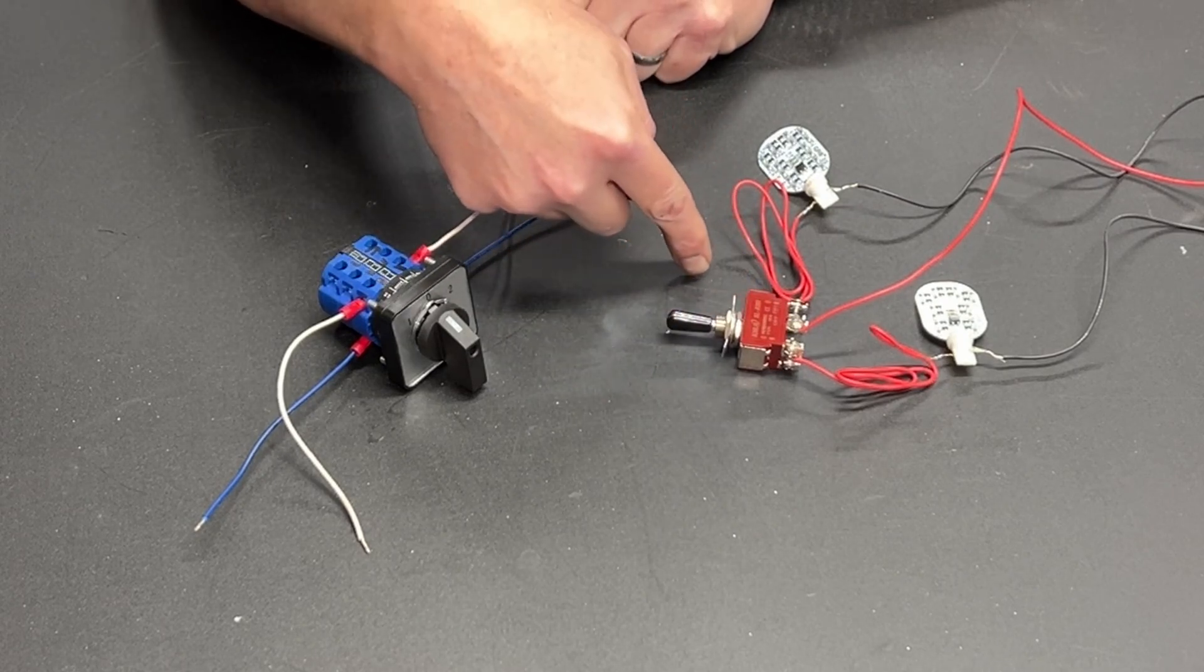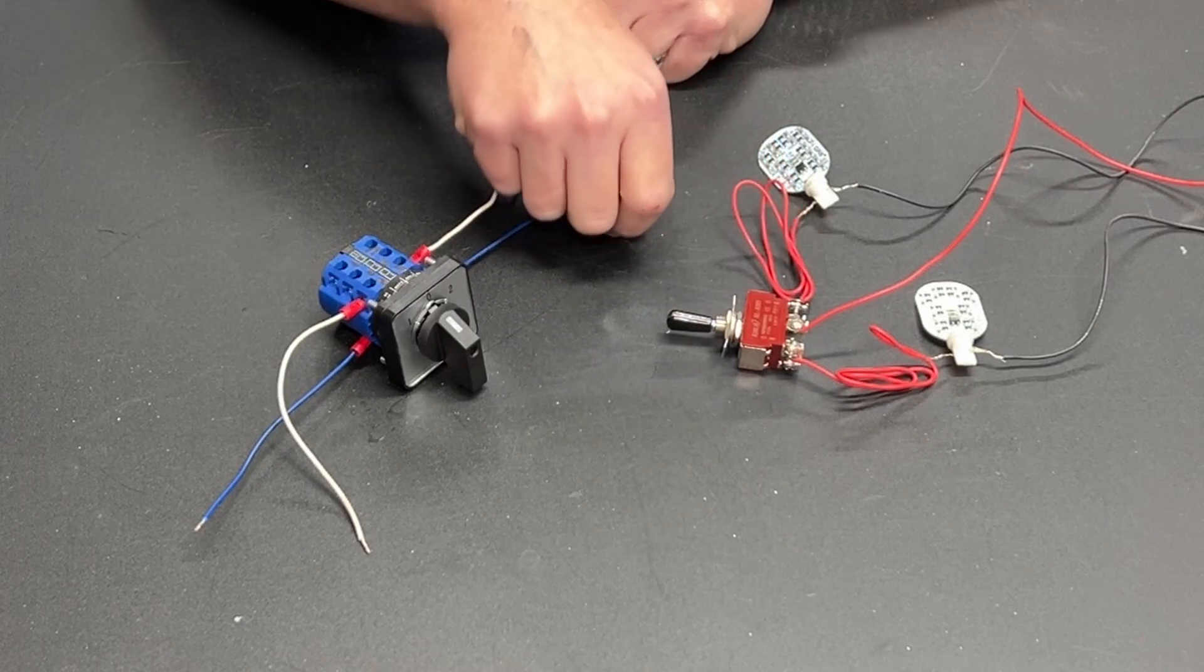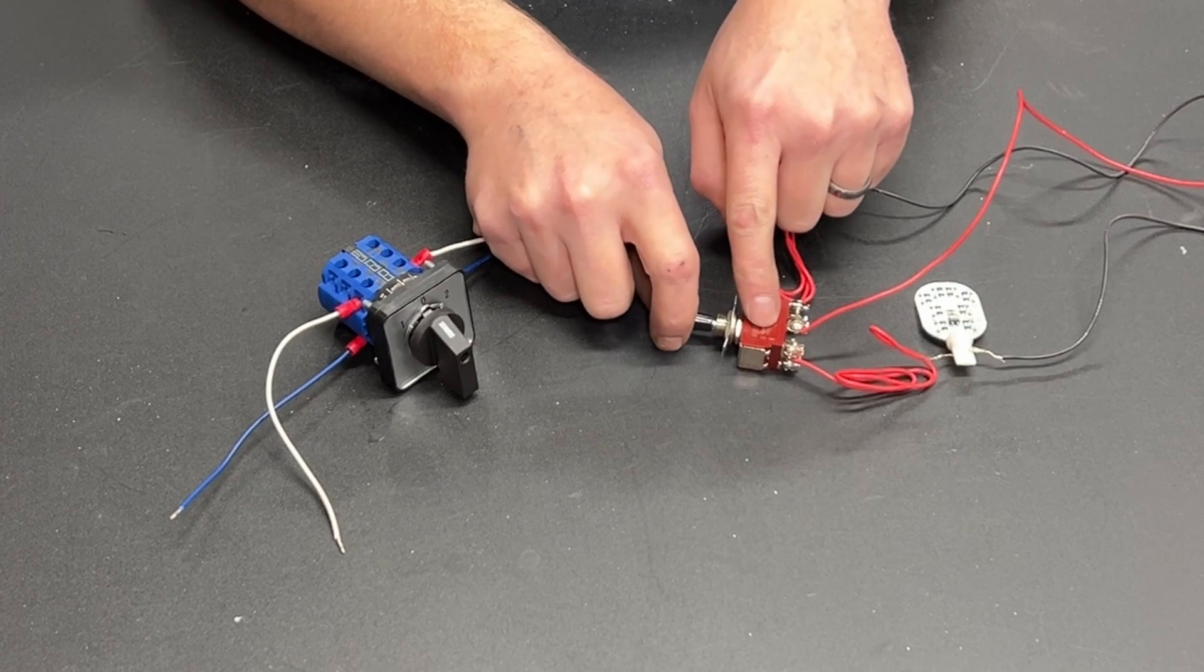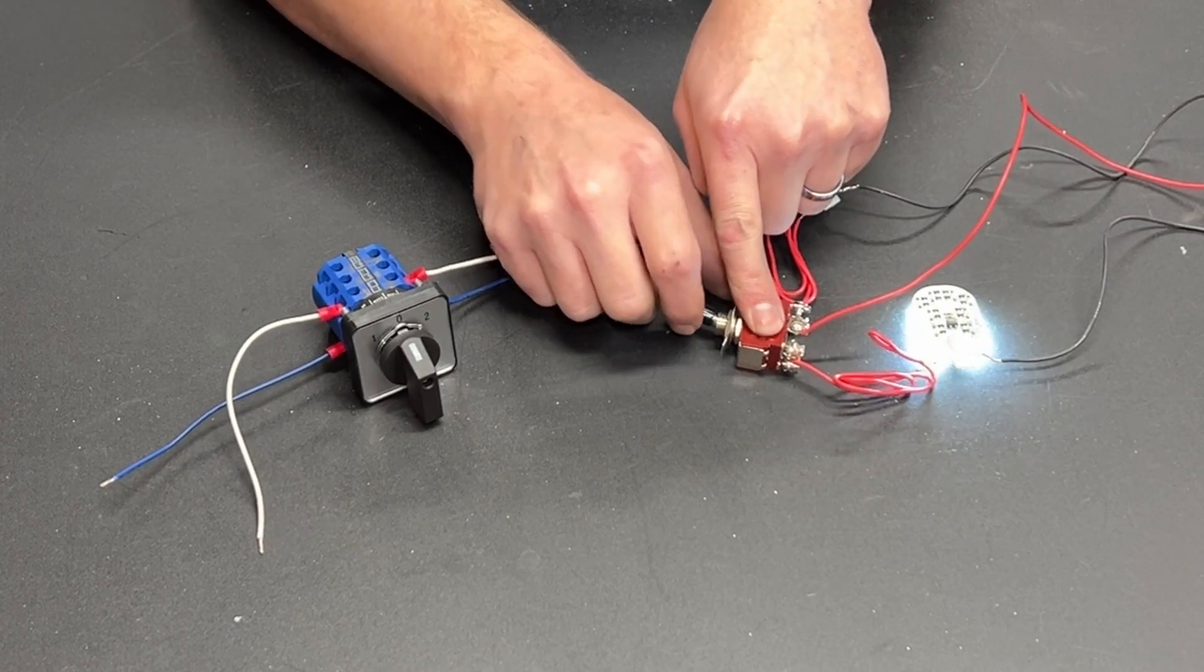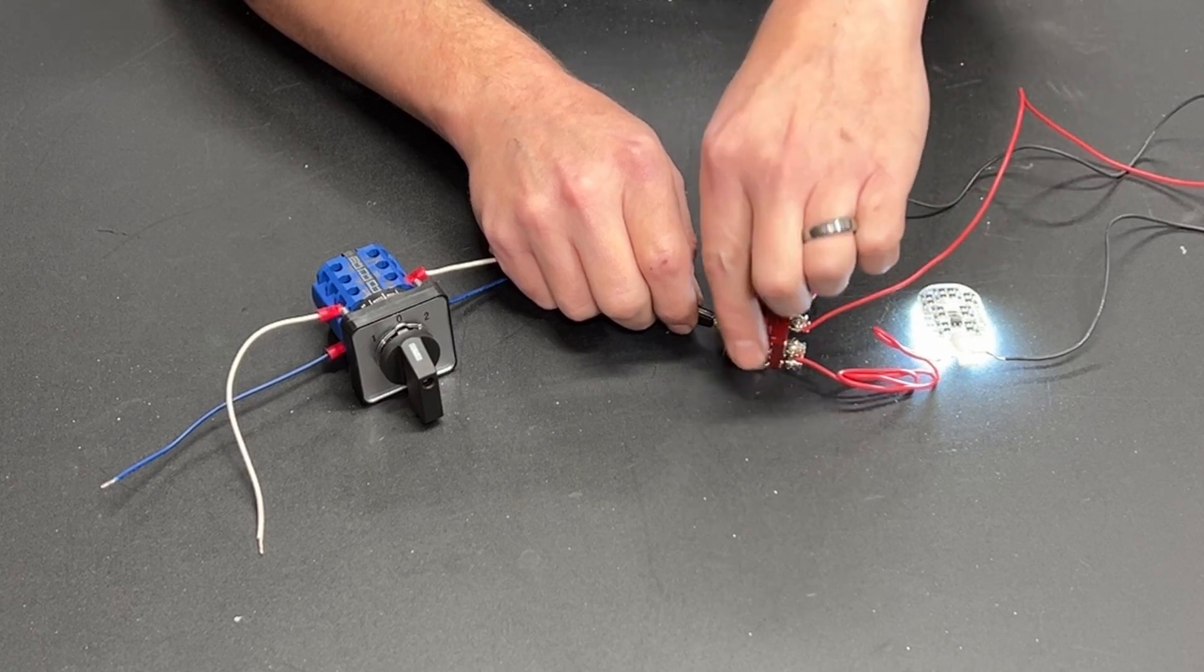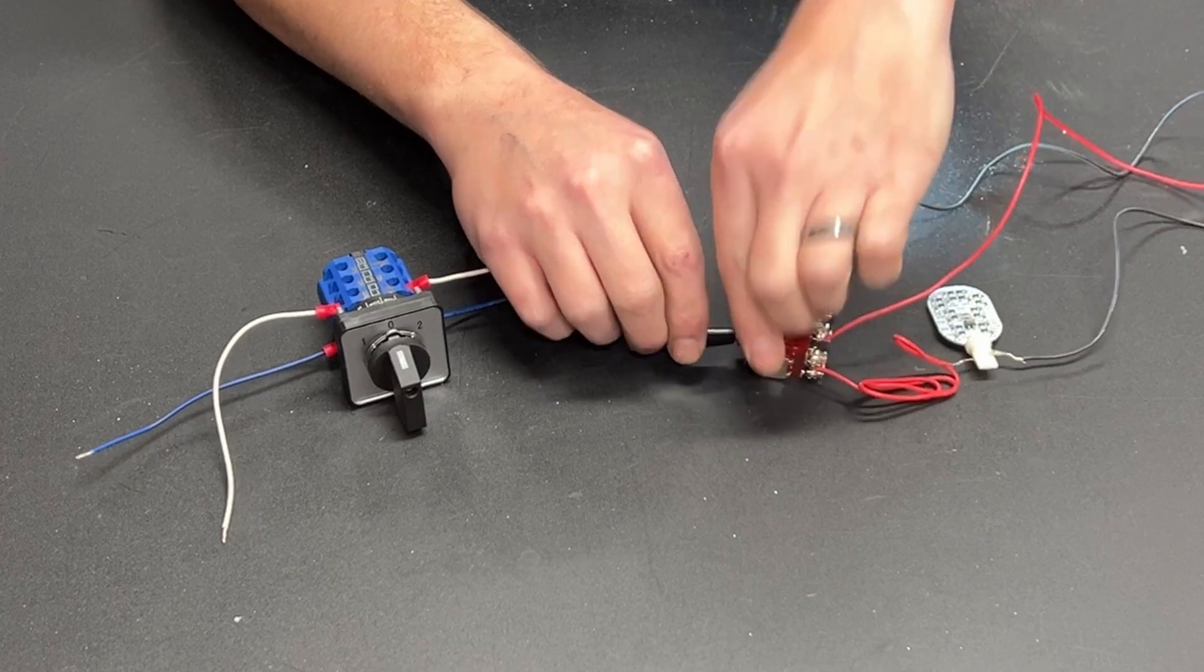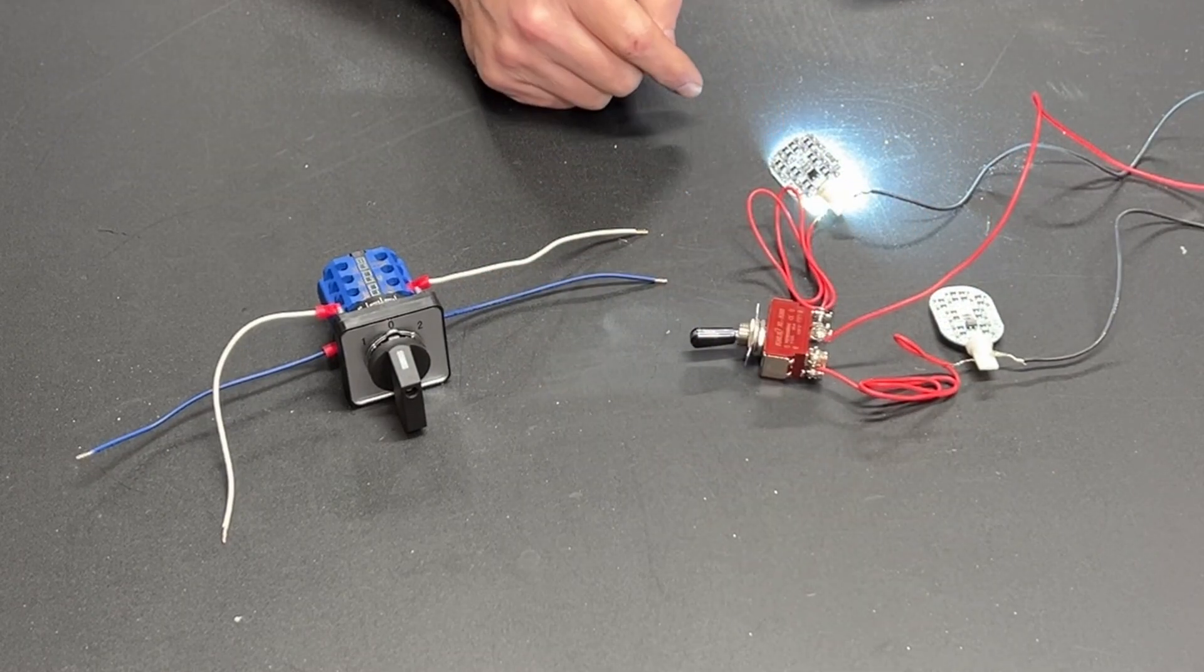So if I flip it this way power is going to go here. If I flip it that way power is going to go here. So if we hold it down, we flip the switch, you can see that that light bulb is lighting. Go back to center off, flip it the opposite direction, now power is going to this bulb.